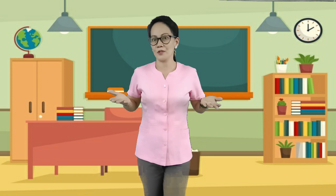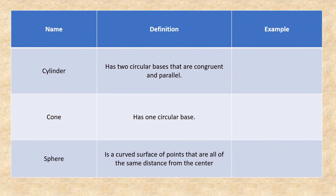Now let's have the solid figures with curved surfaces. The first figure with a curved surface is the cylinder. A cylinder has two circular bases that are congruent and parallel. Second, we have the cone. A cone has one circular base. And lastly, we have the sphere. A sphere is a curved surface of points that are all the same distance from the center.